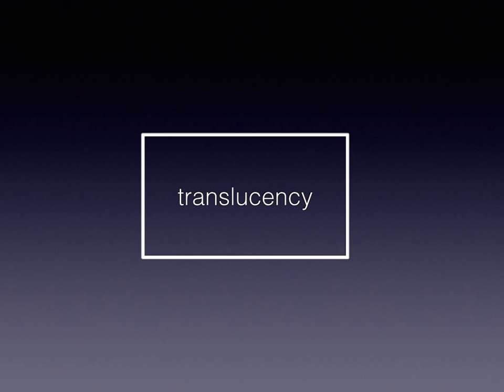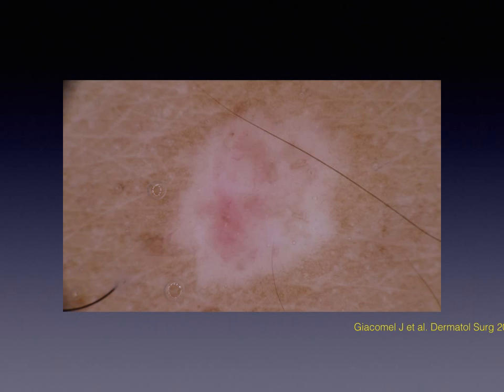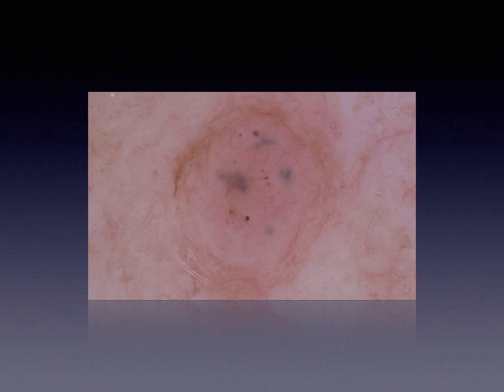Finally, a not so often described in papers but very often dermoscopically seen criterion of basal cell carcinoma is its translucent hue. The translucency is traditionally known to represent also a clinical characteristic of basal cell carcinoma, but dermoscopy significantly enhances its visualization. In superficial basal cell carcinoma, a shiny whitish hue has been described to be present in the majority of cases. However, the characteristic translucent hue is better seen in nodular tumors, like the examples that follow.